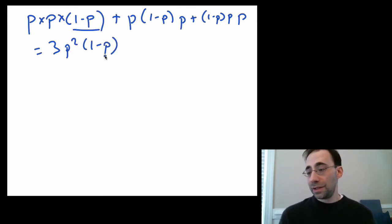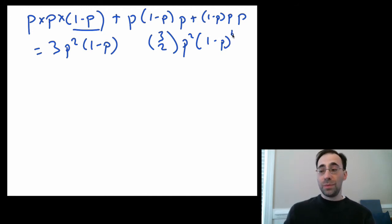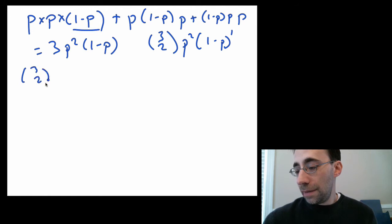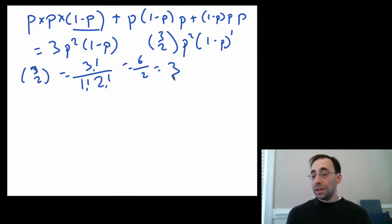And note the binomial equation from the previous one was, in this case, 3 choose 2 times p to the squared, because there's two 1's, times 1 minus p to the 1, because 3 minus 2 is 1. Now, 3 choose 2 is equal to 3 factorial over 1 factorial times 2 factorial. That equals 6 over 2 or 3. So again, we have the combinatorics tells us there are three ways to obtain two 1's out of three draws.